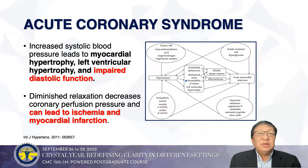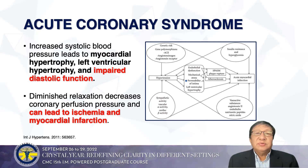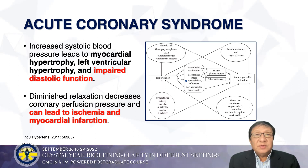Another important consideration is acute coronary syndrome. Increased systolic blood pressure leads to myocardial hypertrophy, LVH, and impaired diastolic function. Diminished relaxation decreases coronary perfusion pressure and can lead to ischemia and myocardial infarction. Hypertension is closely related to acute MI because key risk factors are shared, and hypertension accelerates atherosclerosis through endothelial dysfunction.